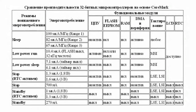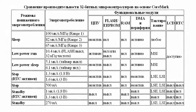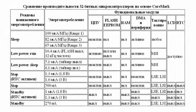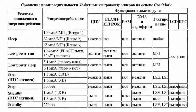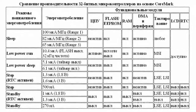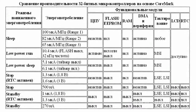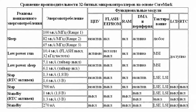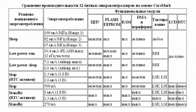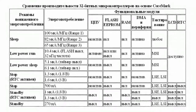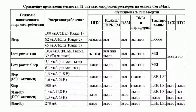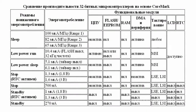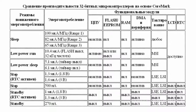In Low Power Run mode, consumption can reach as low as 10.4 µA by executing program code from RAM memory at 32 Hz frequency. Low Power Sleep mode allows you to get consumption of 4 or 2.5 µA if a peripheral is switched on and one of the timers has 32 Hz frequency.